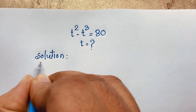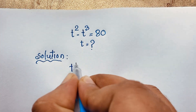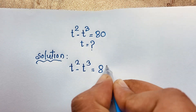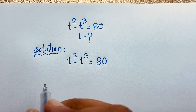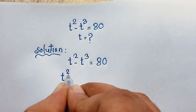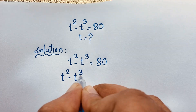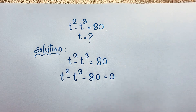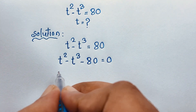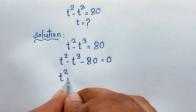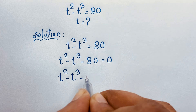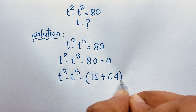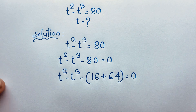Our question is t to the power 2 minus t to the power 3 is equal to 80. Now, if I move the 80 to this side, it will be t to the power 2 minus t to the power 3 minus 80 is equal to 0. This 80 will be 16 plus 64 is equal to 0. You know that 16 plus 64 is 80.